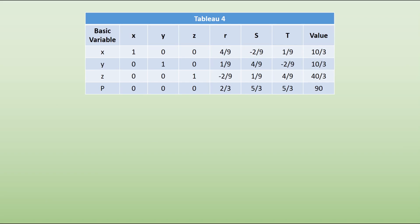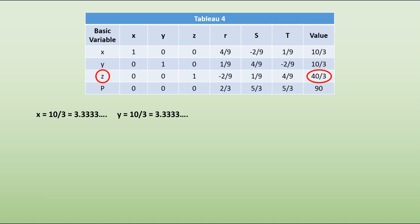Tableau 4 is now complete. The first thing we notice is that there are no negative values on the objective row — we've got three zeros, 2/3, 5/3, 5/3, and 90. There are no negative values, and this means that we can stop. Now what we need to do is read off the values. All we need to do is look down the basic variable column: read x and its value 10/3, y is also 10/3, and z is 40/3. It will also give us the value for p, which is 90.